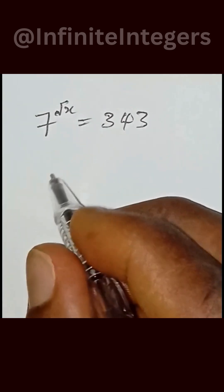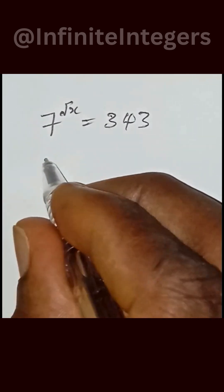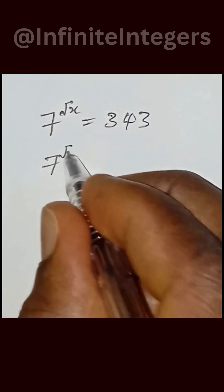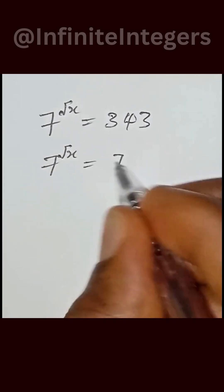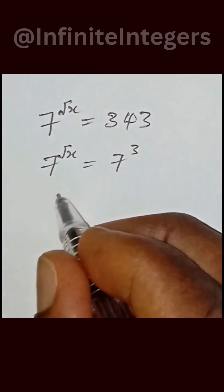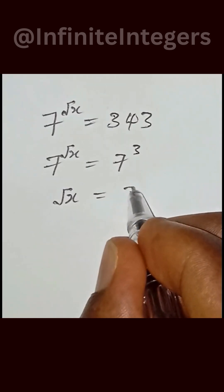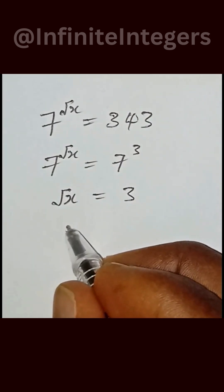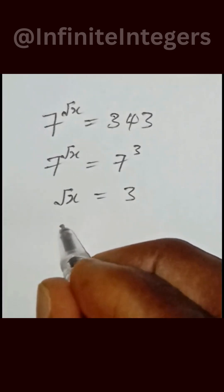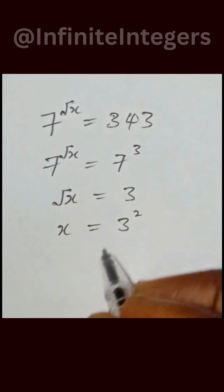So to solve for this, we have to reduce the right-hand side. We have 7 to the power of square root of x equal to 7 to the power of 3. Then we have square root of x equal to 3 by equating the exponent. So then we square both sides, we have x equal to 3 squared, then x equal to 9.